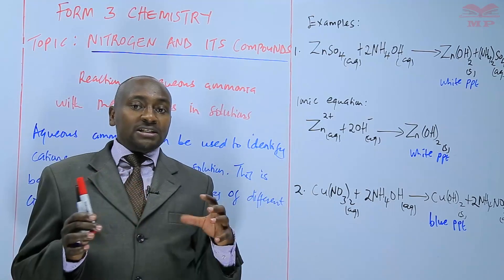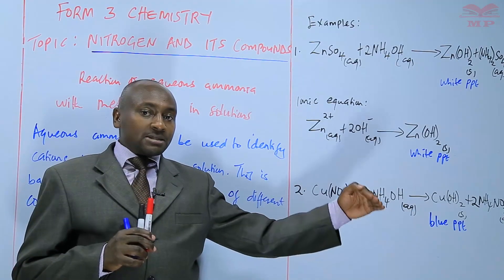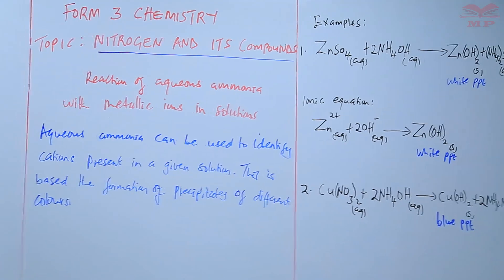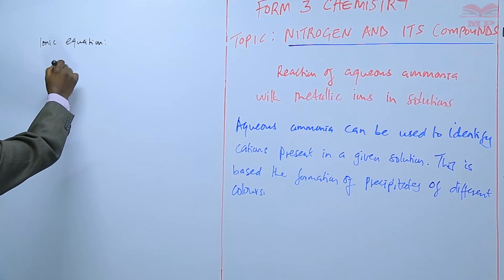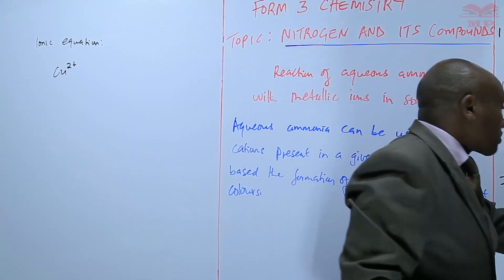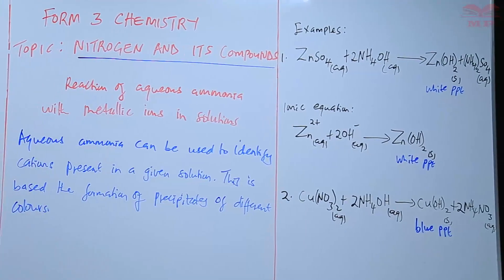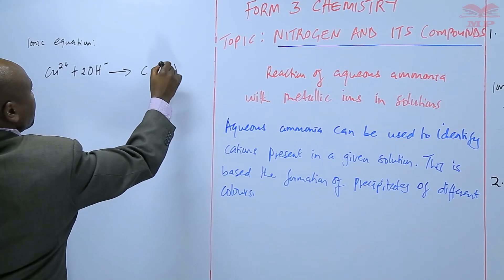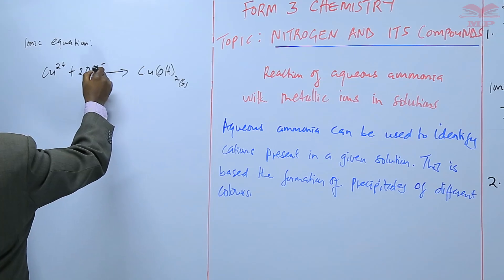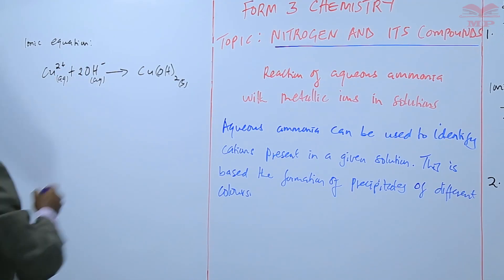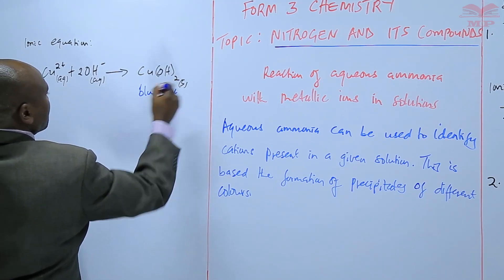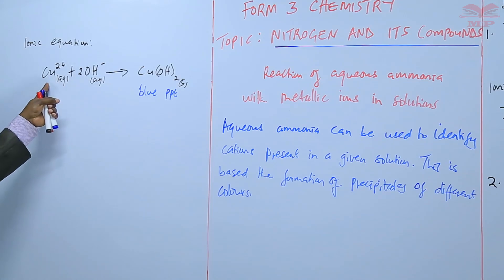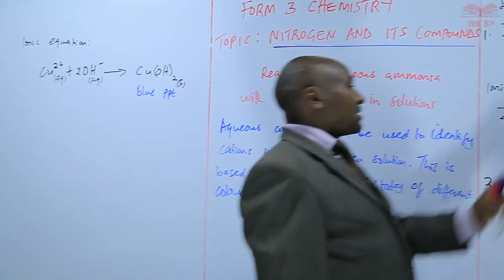We can see that different cations or different metallic ions are forming different colors of precipitates. We can also write this in the form of an ionic equation showing the formation of the precipitate. The copper(II) ions combine with the hydroxide ions to form copper(II) hydroxide, which is a blue precipitate. So if the precipitate is blue, copper(II) ions are present; if the precipitate is white, zinc ions are present.